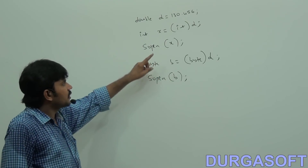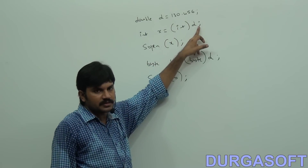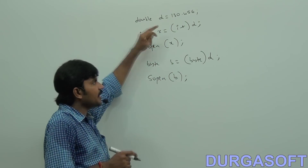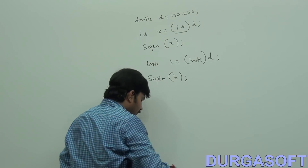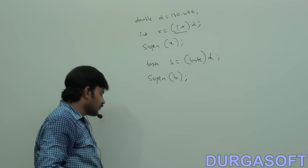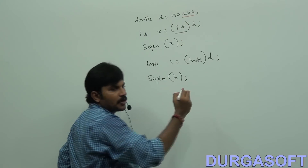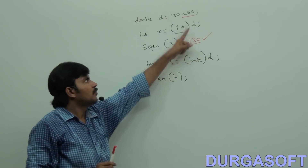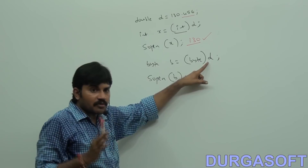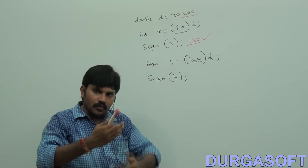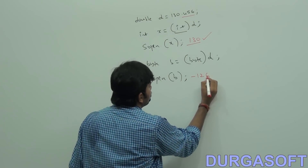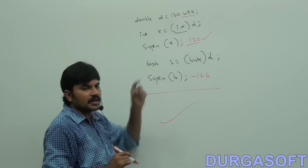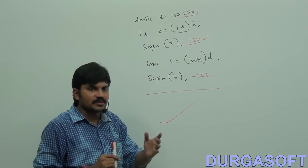Whenever we are assigning floating point values to integral type by explicit type casting, the digits after the decimal point will be gone. So, print x: what is the answer we are going to get? 130 by default. Similarly, 0.456 will be gone. 130 will remain. But 130 cannot fit inside byte. That's why, once again typecasting happens. What is the answer? Minus 126.